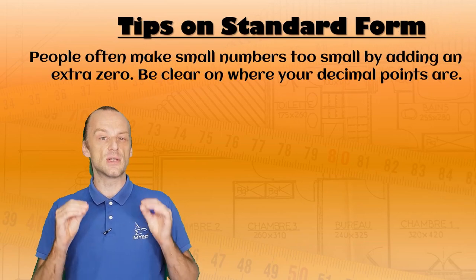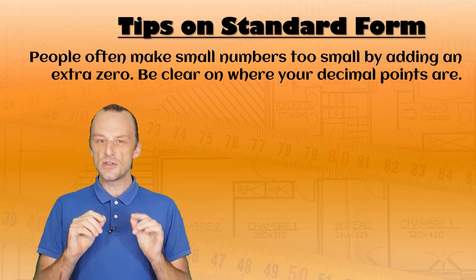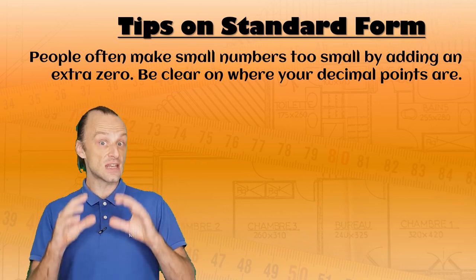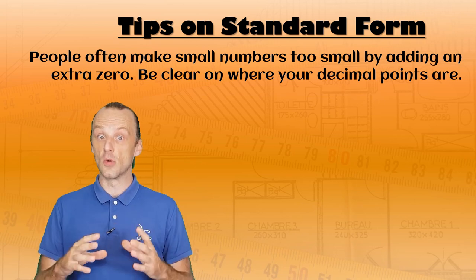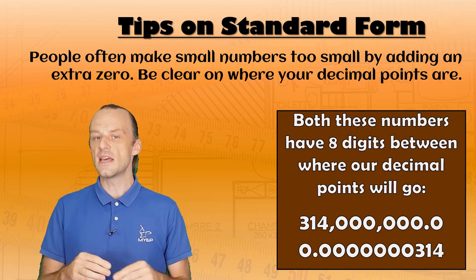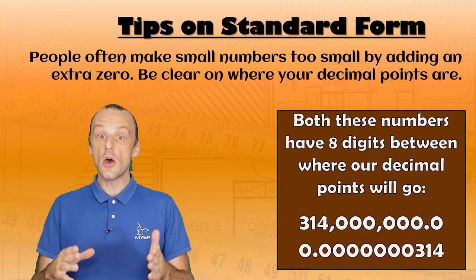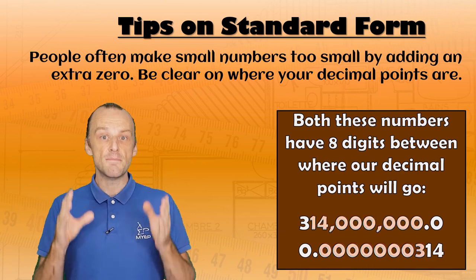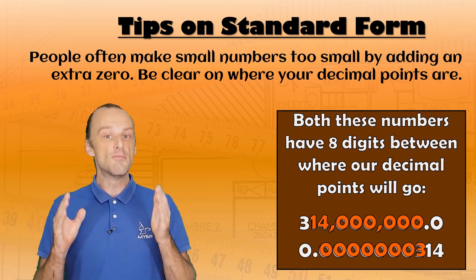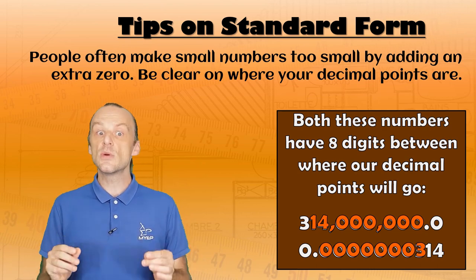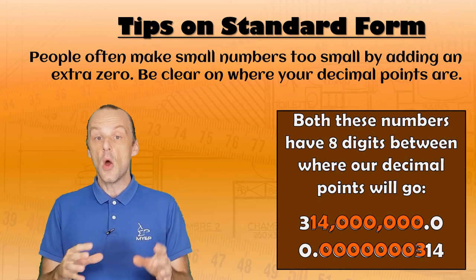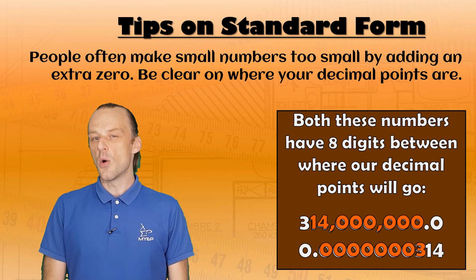Finally, for small numbers, notice again that the first non-zero digit will be one of the numbers you jump over to go from your standard form number back to your original small number. So you're going to end up with fewer zeros after the decimal point than the number of orders you have jumped. So both 314 million and 0.0000000314 both have 8 digits between the two places where we find our decimal point. But the small number will include the 3, but the big number will not.